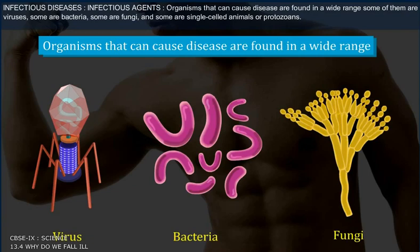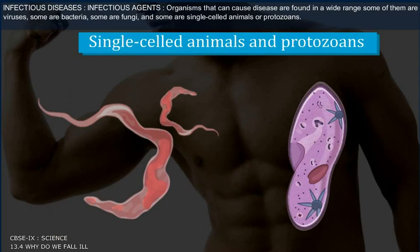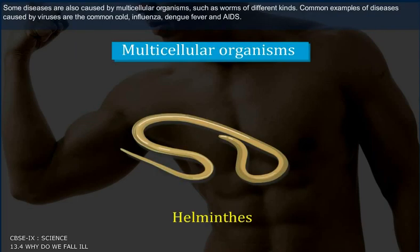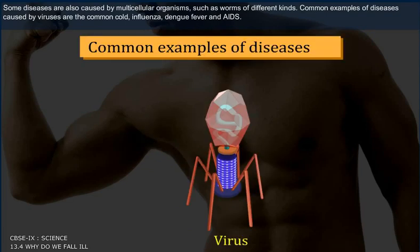Organisms that can cause disease are found in a wide range. Some of them are viruses, some are bacteria, some are fungi, and some are single-celled animals or protozoans. Some diseases are also caused by multicellular organisms such as worms of different kinds.